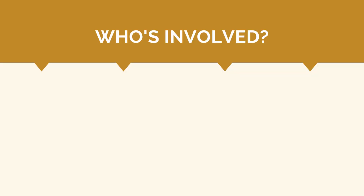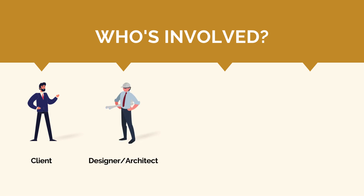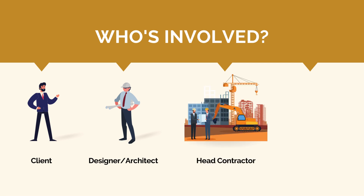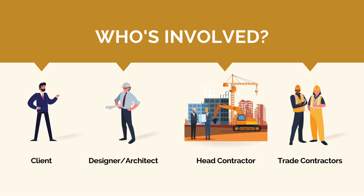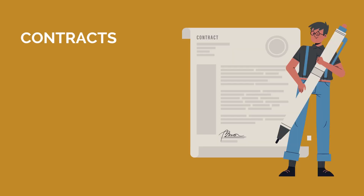On any project, as a minimum, we'll have a client who's the project owner paying for the project to be built, a designer or architect who drafts the drawings and specifications, a head contractor engaged to manage the end-to-end project delivery, and trade contractors engaged to complete specific scopes of work. Each of these different parties need to work together collaboratively. To do this, we need a way of defining the relationship between each of these key parties, defining the specific scopes and responsibilities — and to do this, we use contracts.